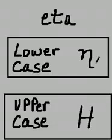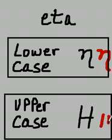Eta. Lower case. Left leg is shorter than the right leg. Uppercase like a capital H.